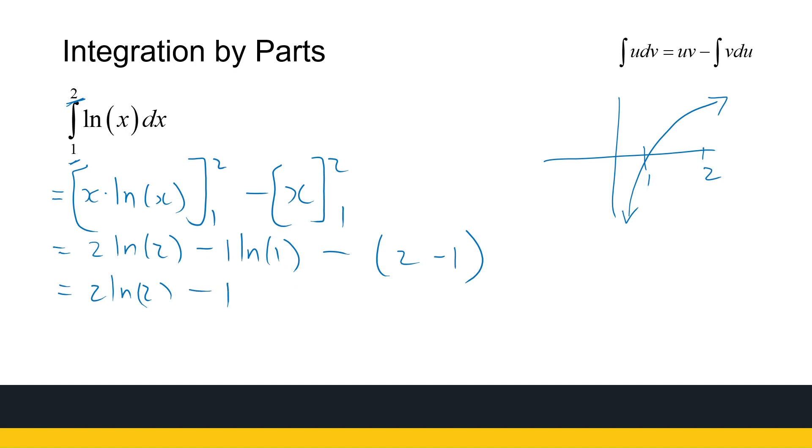So that gives me 2 ln 2. Now ln of 1 is 0, and that's minus 1. All right. So we're going to treat it exactly the same way. If it's a definite integral, we must just substitute. And we obviously do not need the c because it's a definite integral, so we're calculating a real value. And that is integration by parts.